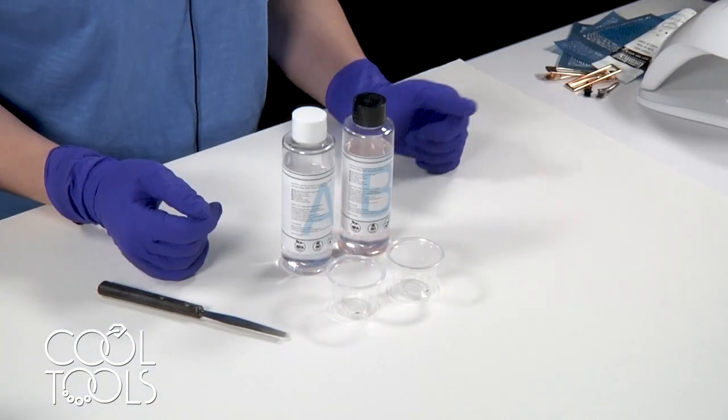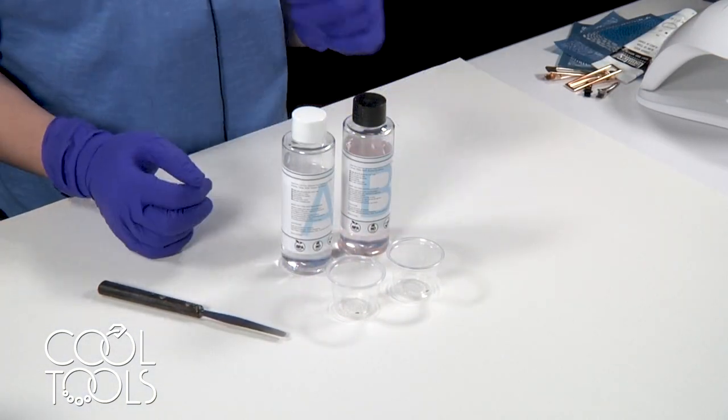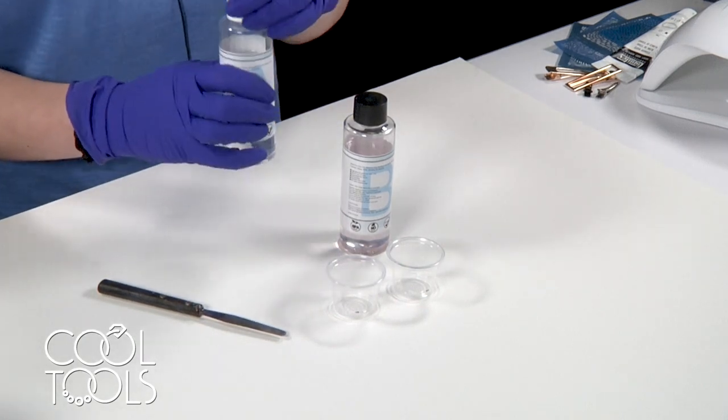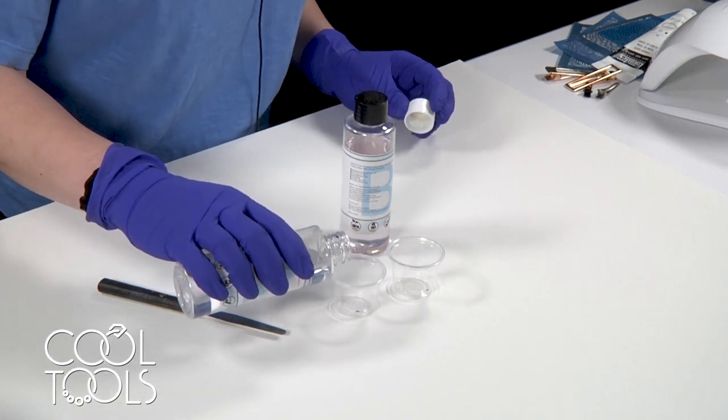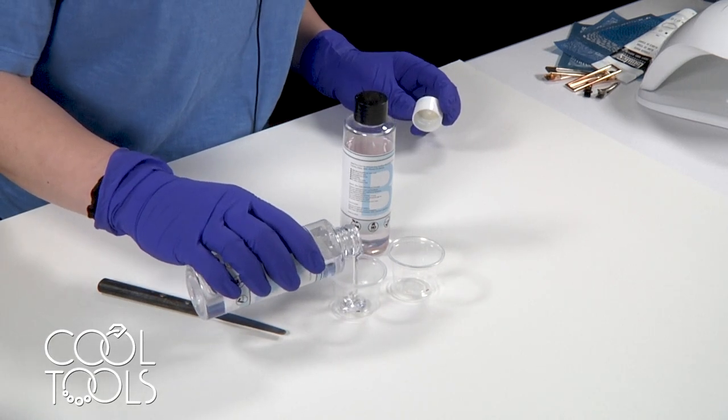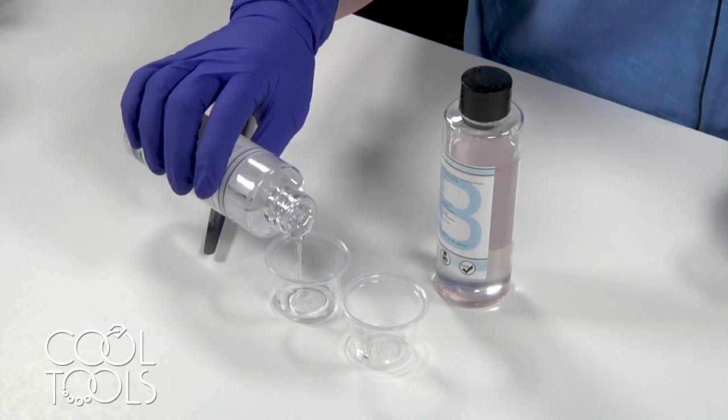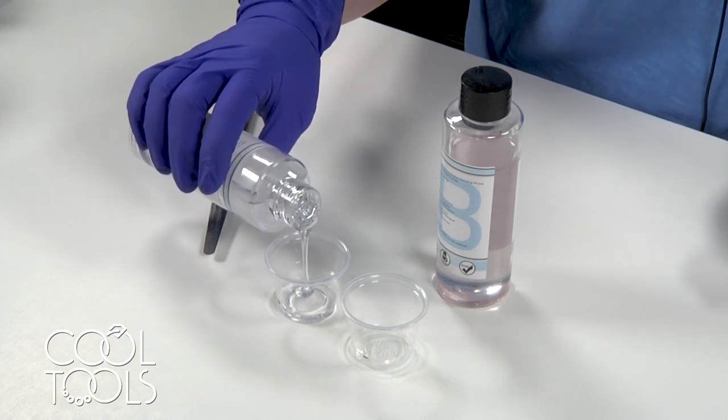So before we get started I've put on my respirator mask and a pair of rubber gloves and I'm going to be pouring equal parts of both part A and part B of this resin. It's a one-to-one volume ratio and I'm filling to a little mark that I've made on my mixing cups here.